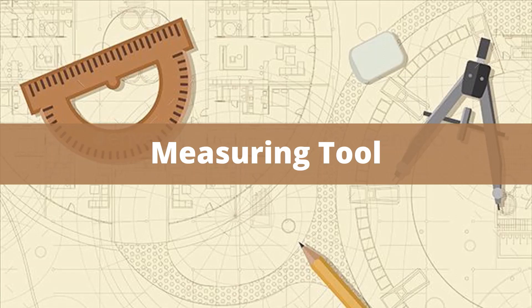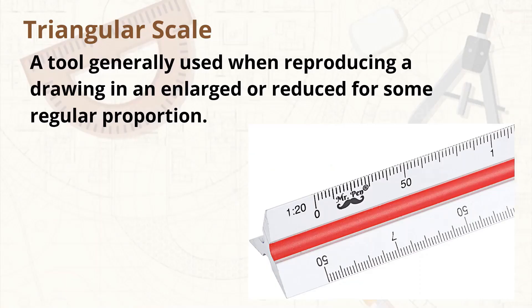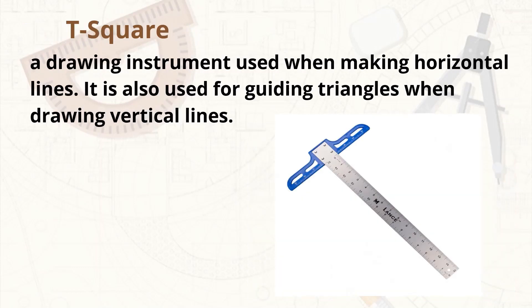The next hand tools fall under measuring tools — these are the tools used to produce quality and accurate drawings or designs. Triangular scale — a tool generally used when producing a drawing in an enlarged or reduced form for regular proportions. Its main function is to reproduce the measurements of an object in full size, reduced size, and enlarged size. T-square — a drawing instrument used when making horizontal lines. It is also used for guiding triangles when drawing vertical lines. It is made up of wood, plastic, or a combination of both.